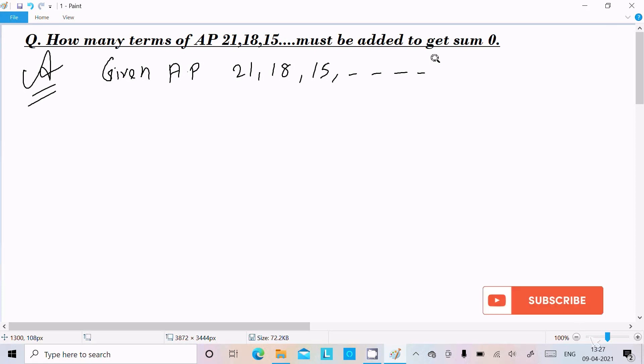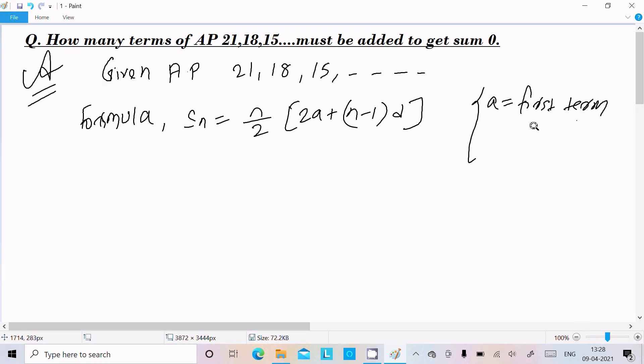So here we know the formula of sum: Sn equal to n by 2, 2a plus (n minus 1) into d. Inside, right, a is the first term, d is the common difference, n is the total number of terms.